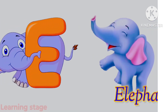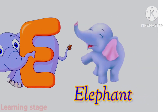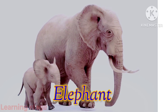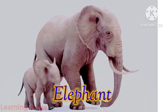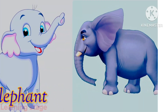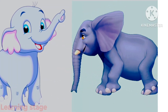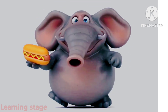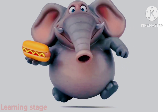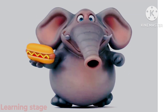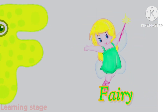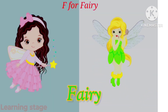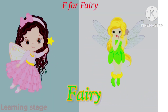E is for elephant, elephant. F is for fairy, fairy.